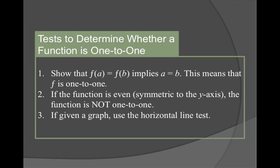Lastly, if given a graph, we can use the horizontal line test. And I know many of you will probably use this more than anything because you guys have those graphing calculators. And I personally think the horizontal line test is one of the easiest tests for figuring out if a function is 1 to 1.